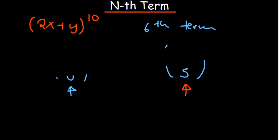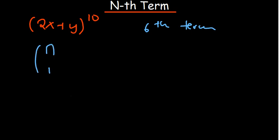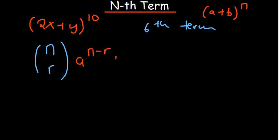So how do you do that without expanding everything? The binomial coefficient is C(n, r), and if you have (a + b) raised to the power n, your a is going to have the power n minus r, and your b just has power r.